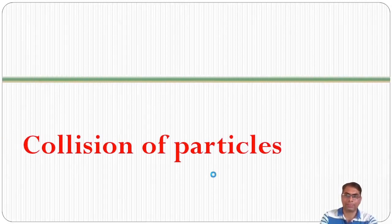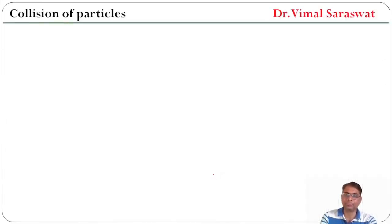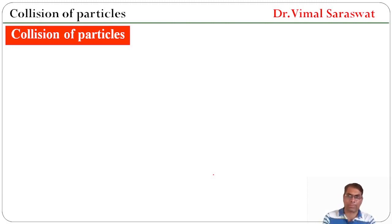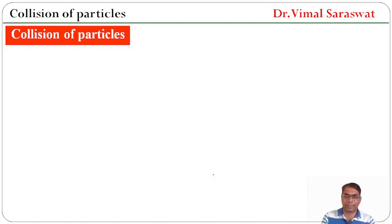Collision of particles. There are two types of collisions: elastic collision and inelastic collision. The linear momentum remains conserved in both types of collisions, but kinetic energy is conserved only in elastic collision. Whereas in inelastic collision, total energy remains constant but kinetic energy does not remain constant.